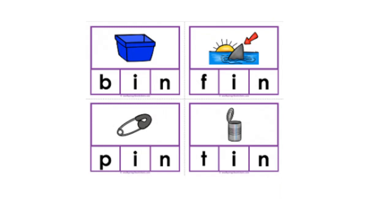Let's start with the -in word families. Look at the pictures and read the words with me. This is a bin. This part of the fish is called a fin. Here is a pin. And this is a tin.